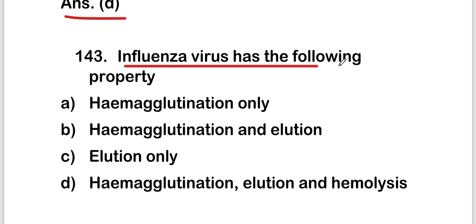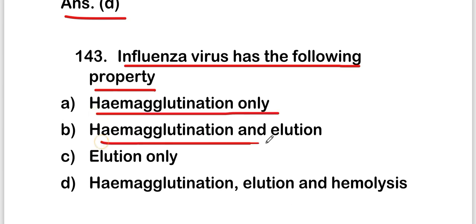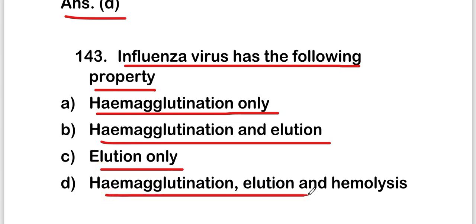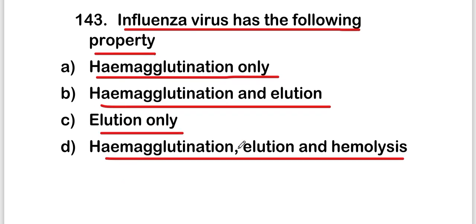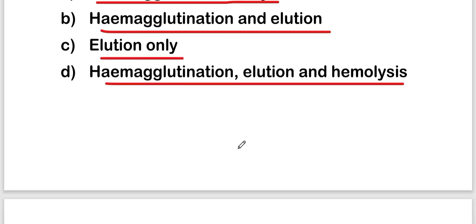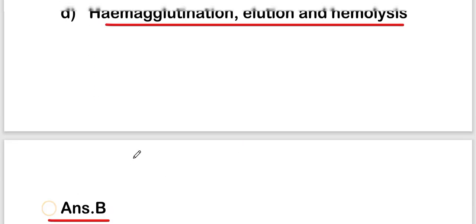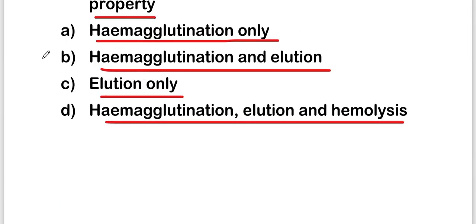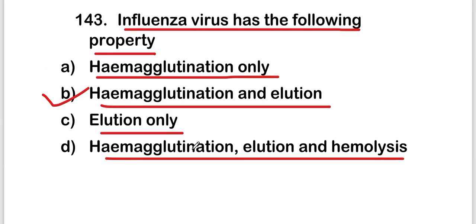The next question is: Influenza virus has which of the following properties — hemagglutination only, hemagglutination and elution, elution only, or hemagglutination, elution, and hemolysis? The right answer is option B, that is hemagglutination and elution.